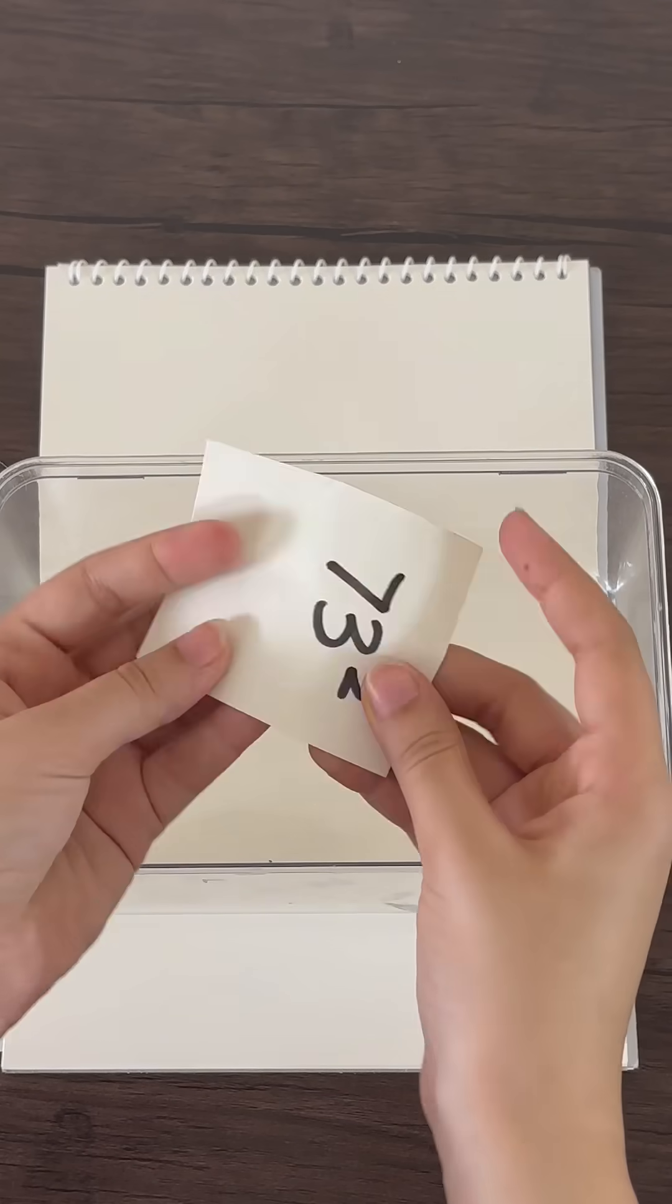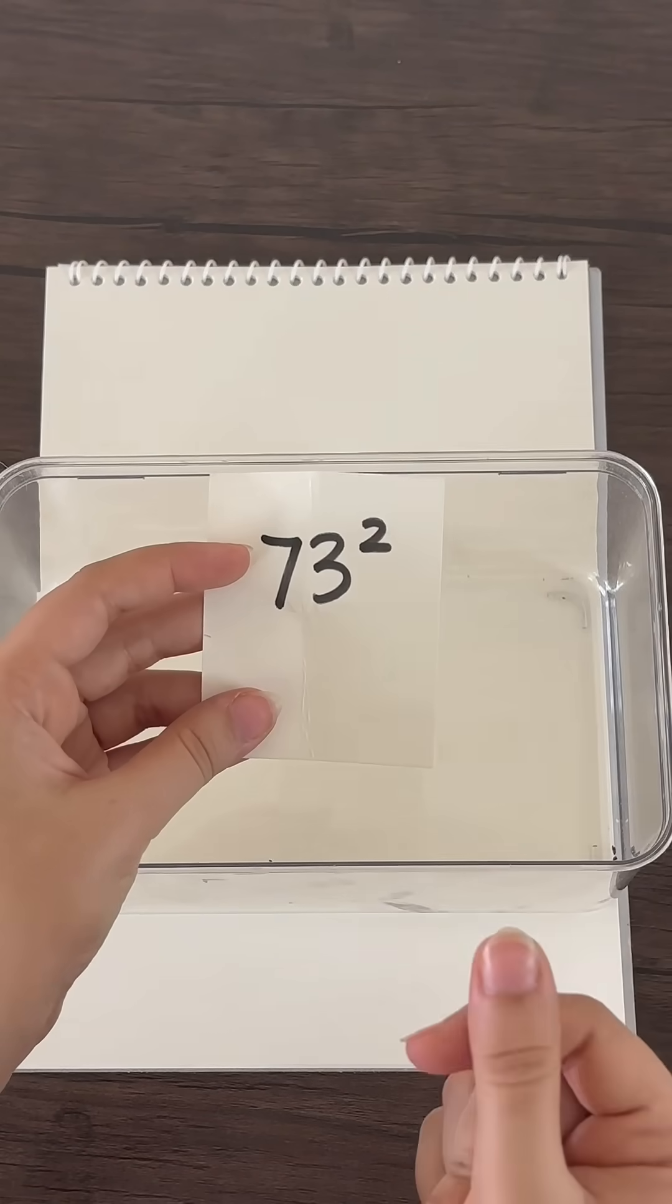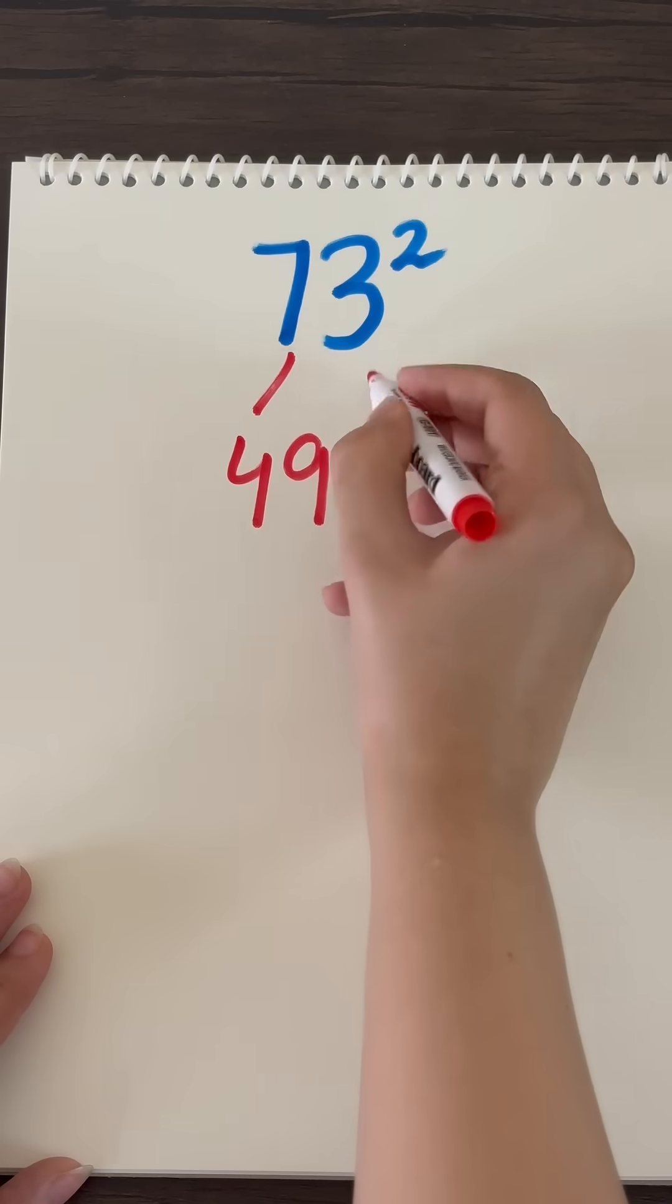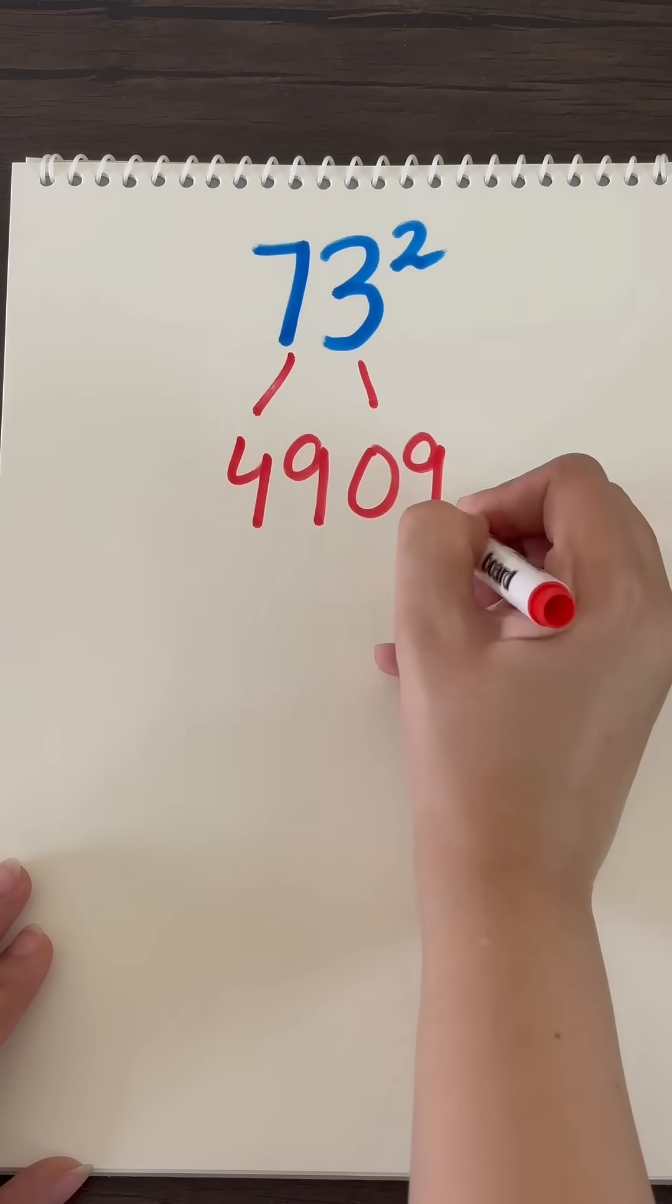Let's see which number is this. Whoa, it's 73. So let's begin. Square of 7 is 49. Square of 3 is 9. Writing it in two digits, it's 09.